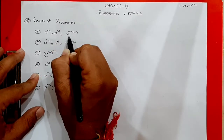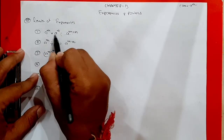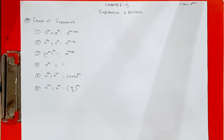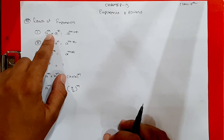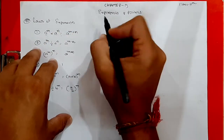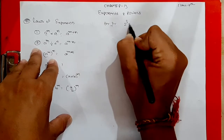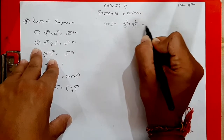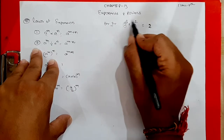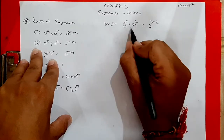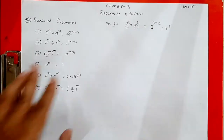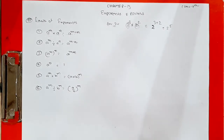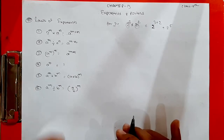This rule says that if both bases are the same — the base is the number at the bottom — and there is a multiplication sign in between, then we add the powers. For example, 2 raised to 3 multiplied by 2 raised to 2: both have the same base, so we write the base once and add the powers — giving 2 raised to 5. So when the base is the same and the sign is multiplication, the powers get added.